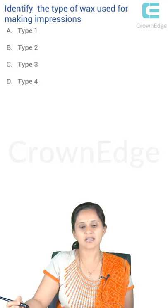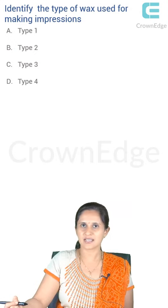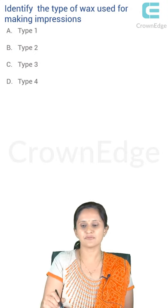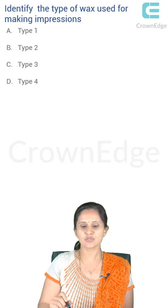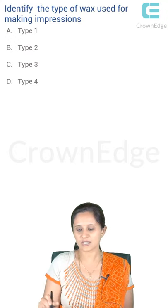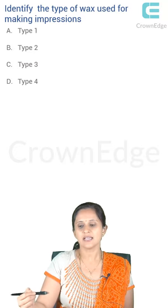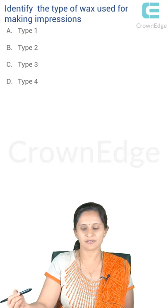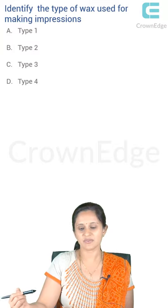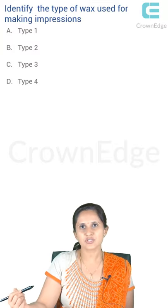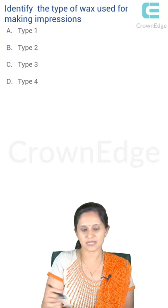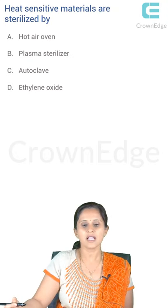Next question: identify the type of wax used for making impressions. Going through the classification of impression waxes, Type 4 corrector wax is used for making impressions — it is used to secure a completely adapted impression. Type 1 is used for reinforcing the external surface, Type 2 is used in rebasing, Type 3 is for minor tray adjustment, and the extra soft is used for making a complete impression. So the answer is D.